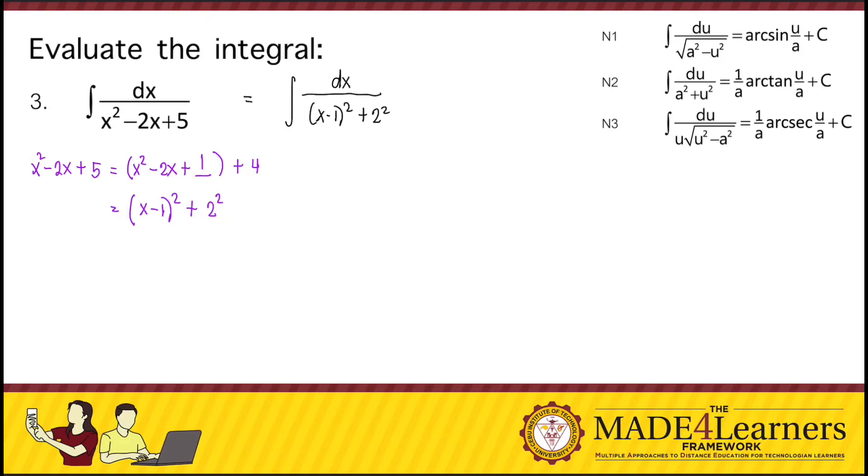Where a squared is equal to 4, so a is equal to 2, and u squared is equal to x minus 1 quantity squared. So that u is equal to x minus 1, and du is just equal to dx.